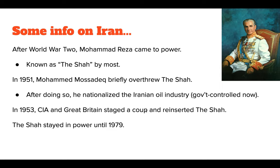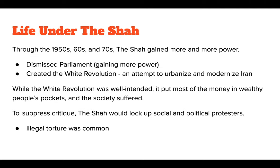The Shah, given power a second time, began consolidating more and more control. He dismissed Iran's parliament, claiming the people didn't know better, and stated he only needed the authority himself. He created what he called the White Revolution — an attempt to urbanize and modernize Iran — to gain both power and international recognition. But while well-intended, it resulted in wealth flowing into the hands of just a few, while most everyday people suffered.